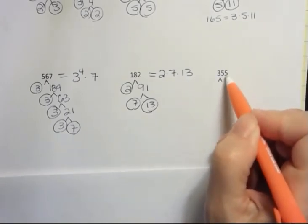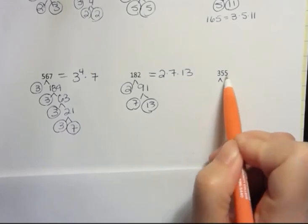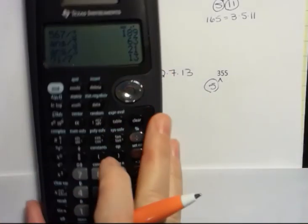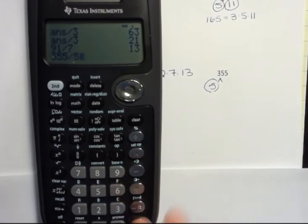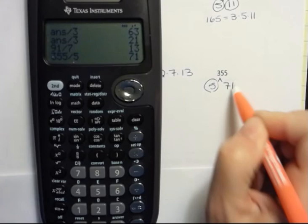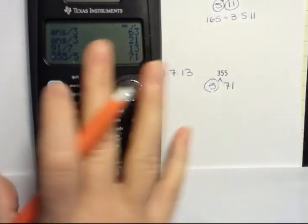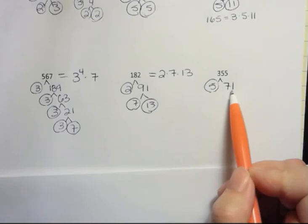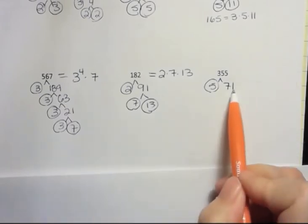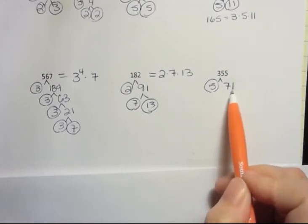355. I'm going to start off by dividing by 5. I can see 2 doesn't go. And if I add those up, I get 13. So 3 doesn't go. So 5 does. And if I want to make sure I don't make any more mistakes, I can divide that on my calculator. 71. And then the question is, is 71 a prime number? Well, 2 doesn't go because it's even. If you add these up, you get 8. So 3 doesn't go. It's odd. So cancel out all odd numbers. 5, well, 5 doesn't go into 71 because it doesn't end in a 5 or a 0.